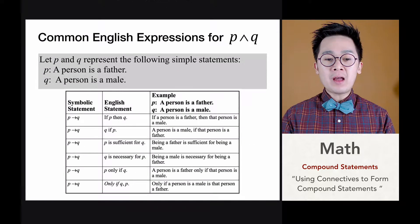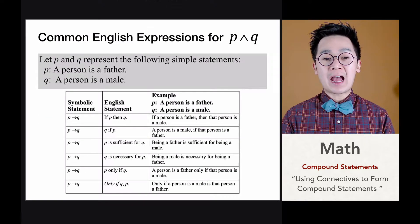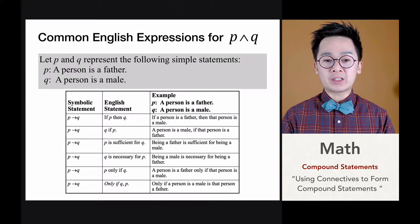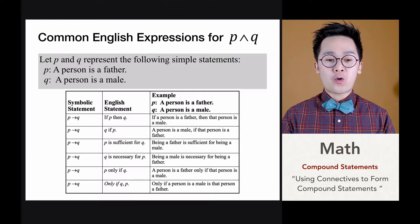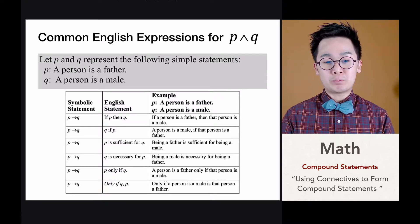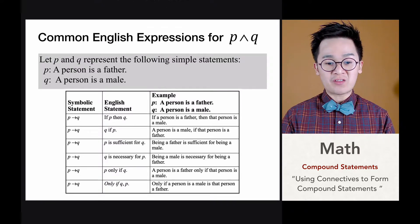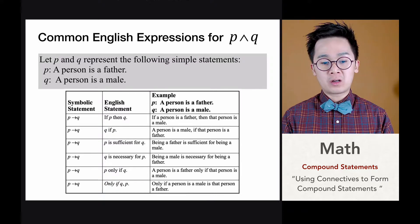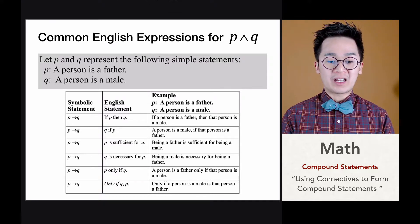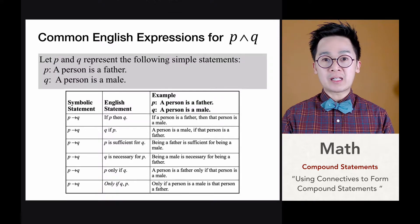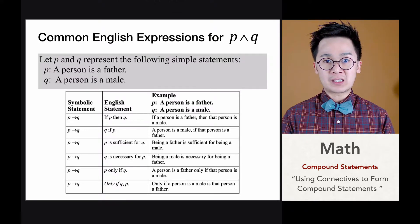There are various words used for the IF-THEN operation: THEN, IF, is sufficient for, is necessary for, ONLY IF, and ONLY IF Q and P — all of these will be represented using the conditional symbol P → Q in symbolic logic.